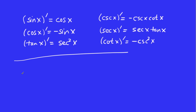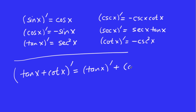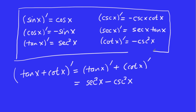Let's do a quick example. Find the derivative of tan x plus cotangent x. This is a sum, so we take the derivative of each term. The derivative of tan x is secant squared x, and the derivative of cotangent x is minus cosecant squared x. So the answer is secant squared x minus cosecant squared x. That's how we use these formulas to find derivatives — they need to be part of your toolkit.